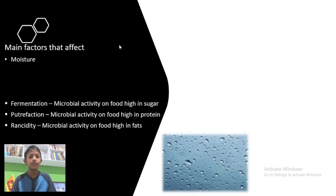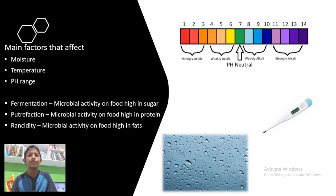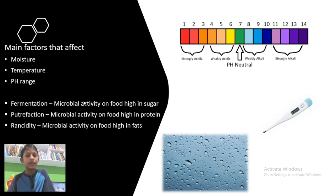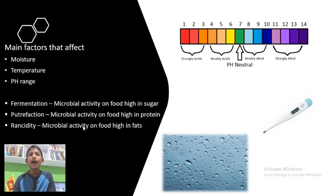Now let's identify the main factors that affect microbial growth. The first one is moisture, the second is temperature, and the third is pH range. We can also see some processes that microorganisms carry out: the first is fermentation — microbial activity on food high in sugar or carbon dioxide; the second is putrefaction — microbial activity on food high in protein; and the third is rancidity — microbial activity on food high in fats.